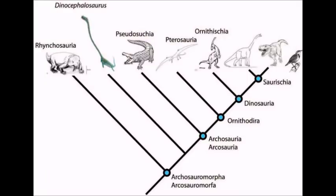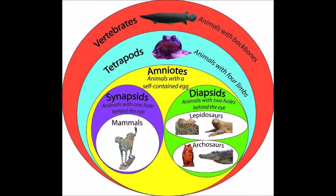Hello everyone, we are going to begin the dinosaur phylogeny series by examining the humble beginnings of dinosaurs at the base of their phylogenetic tree. And to make sure that we understand exactly what dinosaurs are, we will also take a quick look at the evolution of their ancestors starting with the first amniotes. So, let's jump right in.